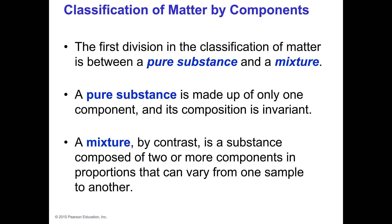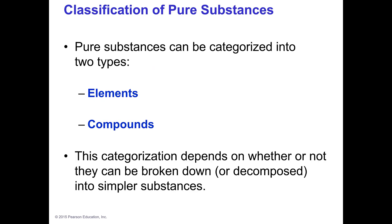When we classify matter by composition rather than state, we have some divisions. Pure substances are one thing — it could be a molecule or an atom, but it's only one thing. A mixture is made up of two or more things and not necessarily in the same exact proportions throughout. No matter where you look in a pure substance, it's going to be the same. Pure substances are either going to be elements or compounds.